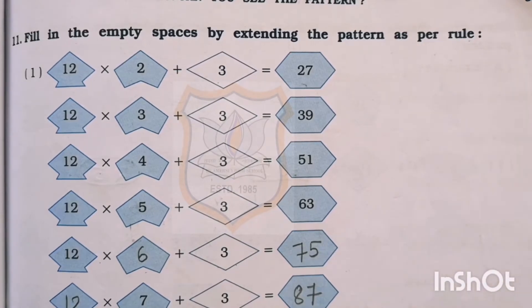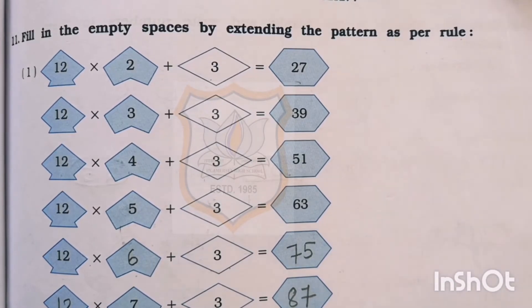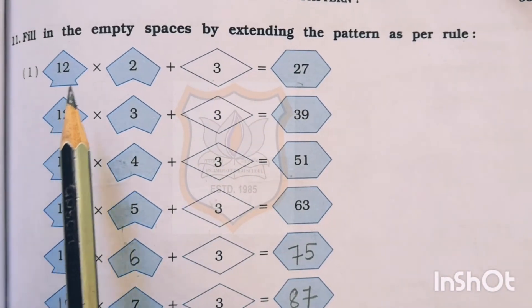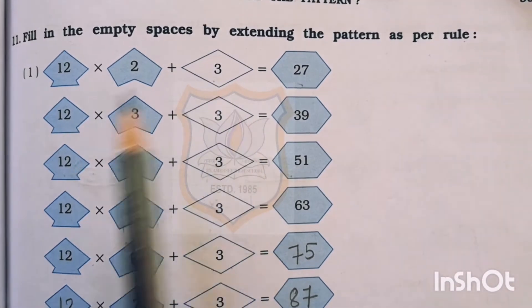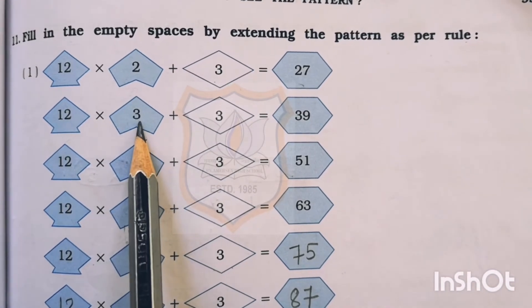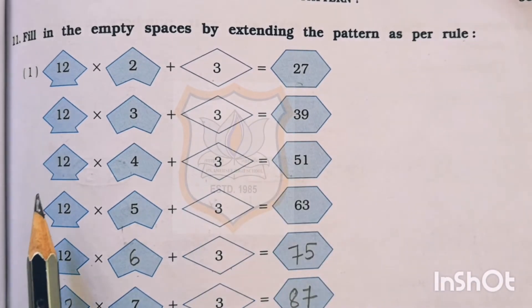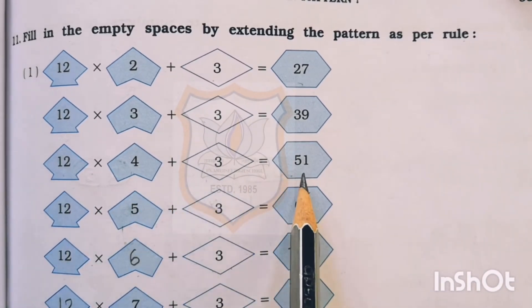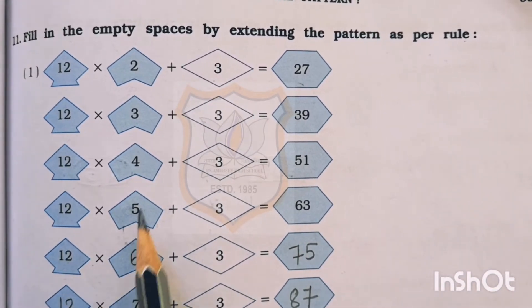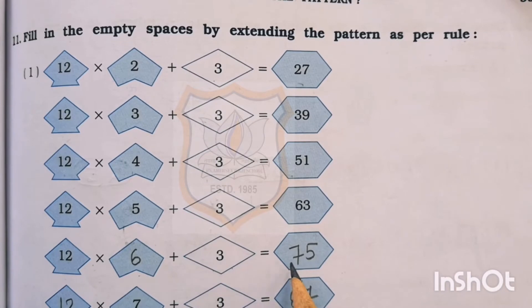Question number 11: fill in the empty spaces by extending the pattern as per the rule. Here, first we have to find out the rule and then extend the pattern. First part: 12 multiplied by 2 plus 3 is equal to 27. Here, 12 is taken, then multiplied by 2, then add 3. Next, 12 multiplied by 3 plus 3, where in place of 2 we write 3, and add 3. We get 39. Then 12 multiplied by 4 plus 3 equals 51. 12 multiplied by 5 plus 3 equals 63. 12 multiplied by 6 plus 3 equals 75.